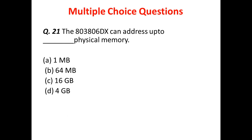Question 10: The 80386 DX can address up to how much physical memory? Option A is 1 MB, Option B is 64 MB, Option C is 16 GB, and Option D is 4 GB. The answer is D — 4 GB. The 80386 can address up to 4 GB of physical memory.